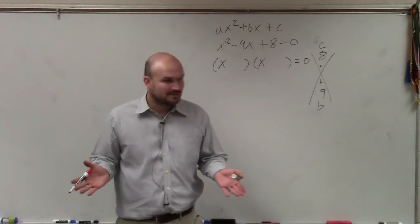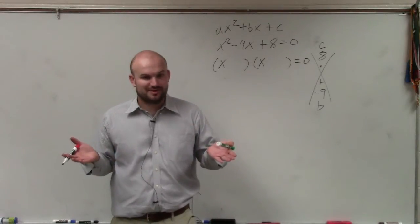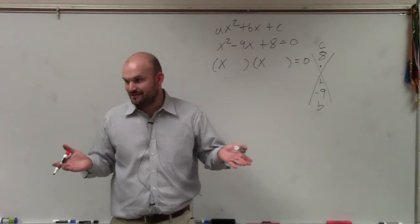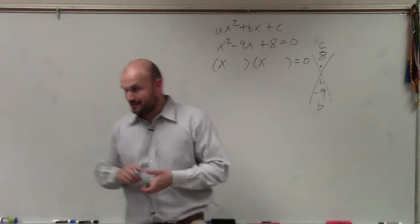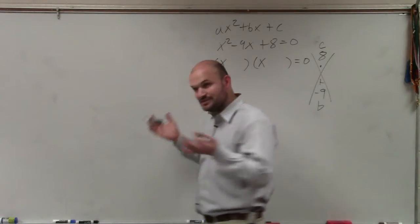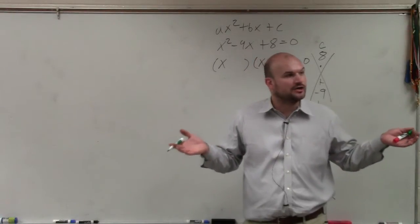This will be the one time I'll take it slow. So we should be able to think about what two numbers multiply to give us 8 and add to give us negative 9, which I'll get to in just a second. But what I want to do is, just in case I give you, let's say, 128.